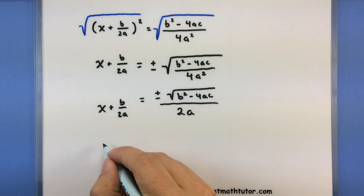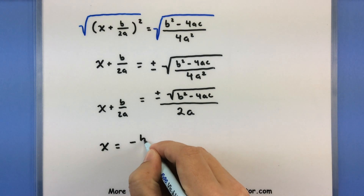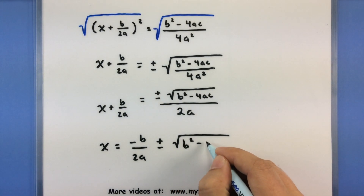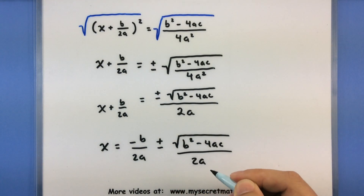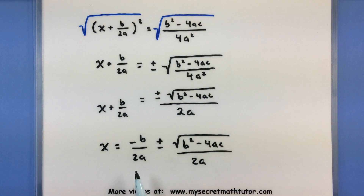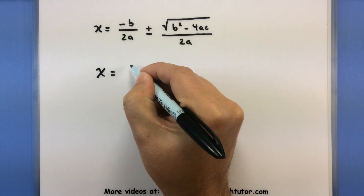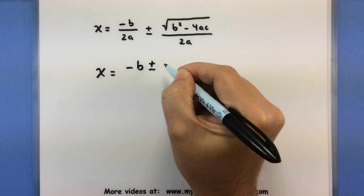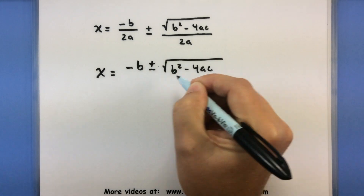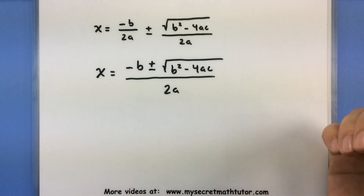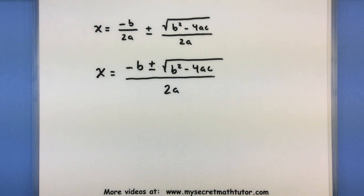Now we are almost there. Let's get x all by itself by subtracting b/2a from both sides. Now we have two fractions that already share the same denominator of 2a, so we can combine them into one single fraction: x = (-b ± √(b² - 4ac)) / 2a. And sure enough, there's our quadratic formula! You can see it really is just a process of running through completing the square very carefully at every step — making sure you simplify and get that common denominator.